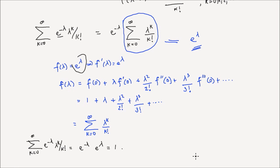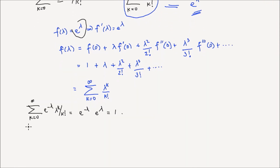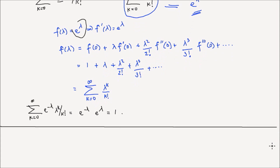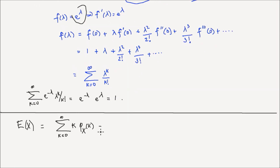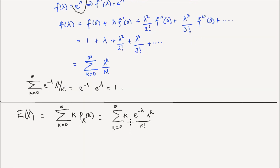Now let's find the expectation of this Poisson random variable. The expectation of x is the sum from k equals 0 to infinity of k times the PMF, which is e to the negative lambda times lambda to the power of k divided by k factorial. When k equals 0, the term is 0, so we can write this as the sum from k equals 1 to infinity of k times e to the negative lambda times lambda to the power of k divided by k factorial.